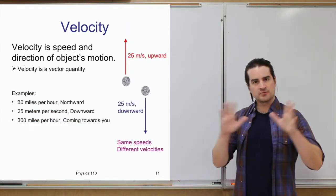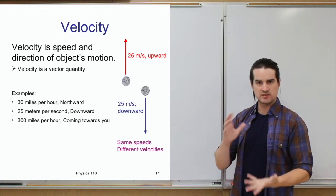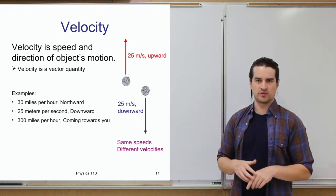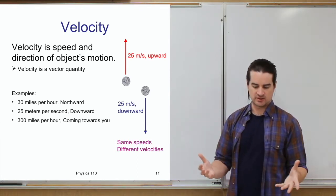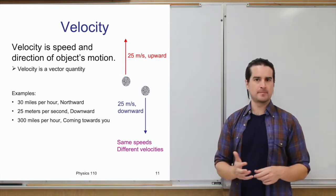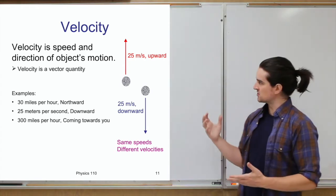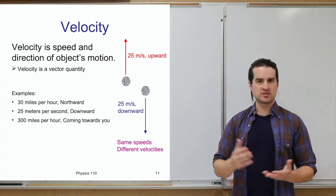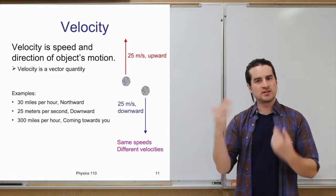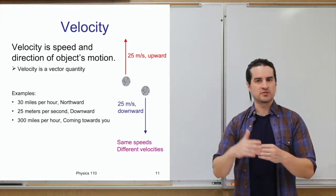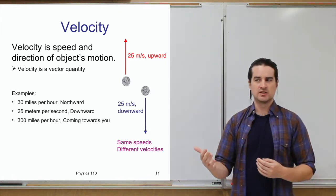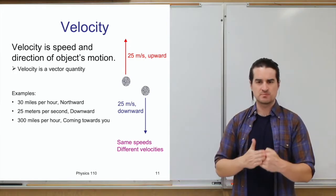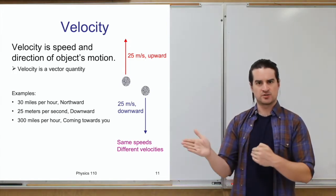So that was all about speed — just the rate an object is moving, distance and time. In physics, beyond the term 'speed,' there's something called velocity, which is essentially speed with direction. So velocity tells you not just how fast something is moving, but also which way.